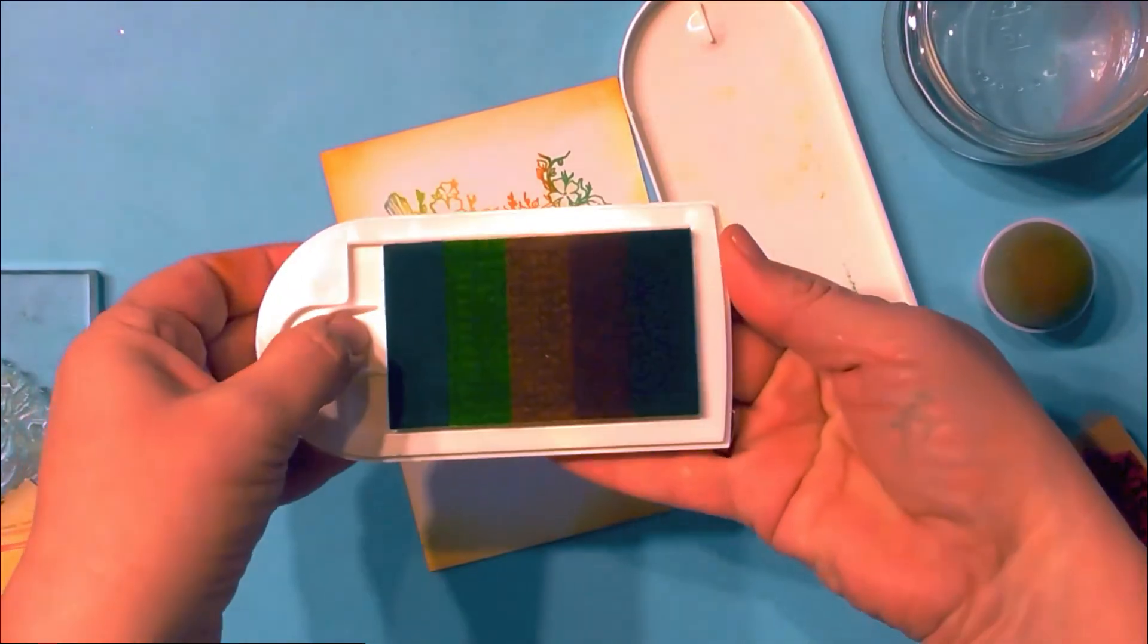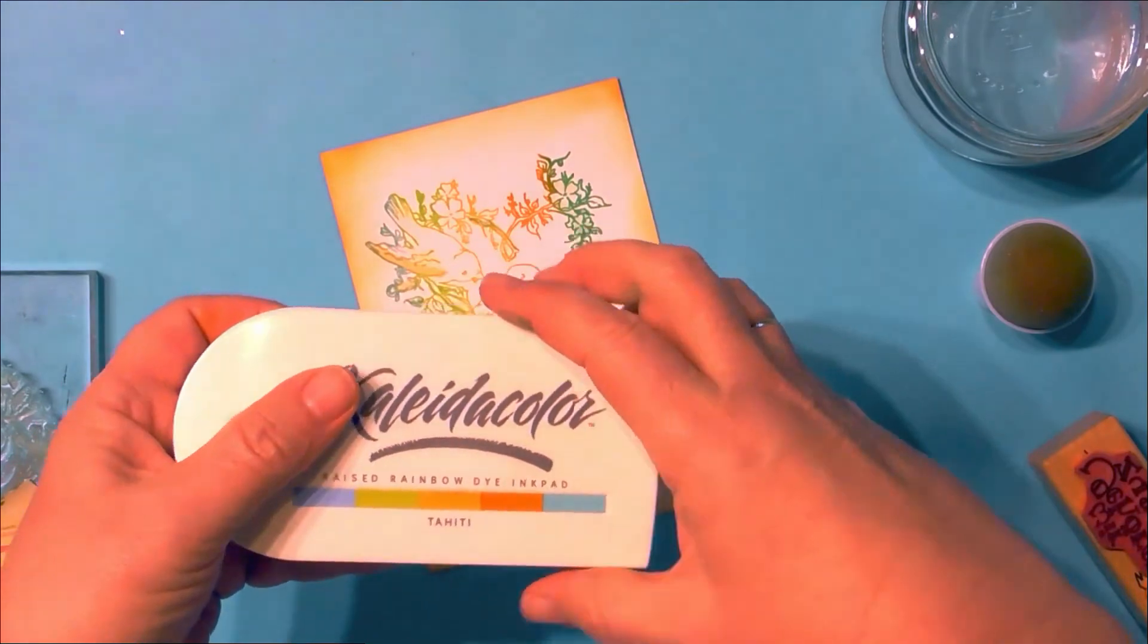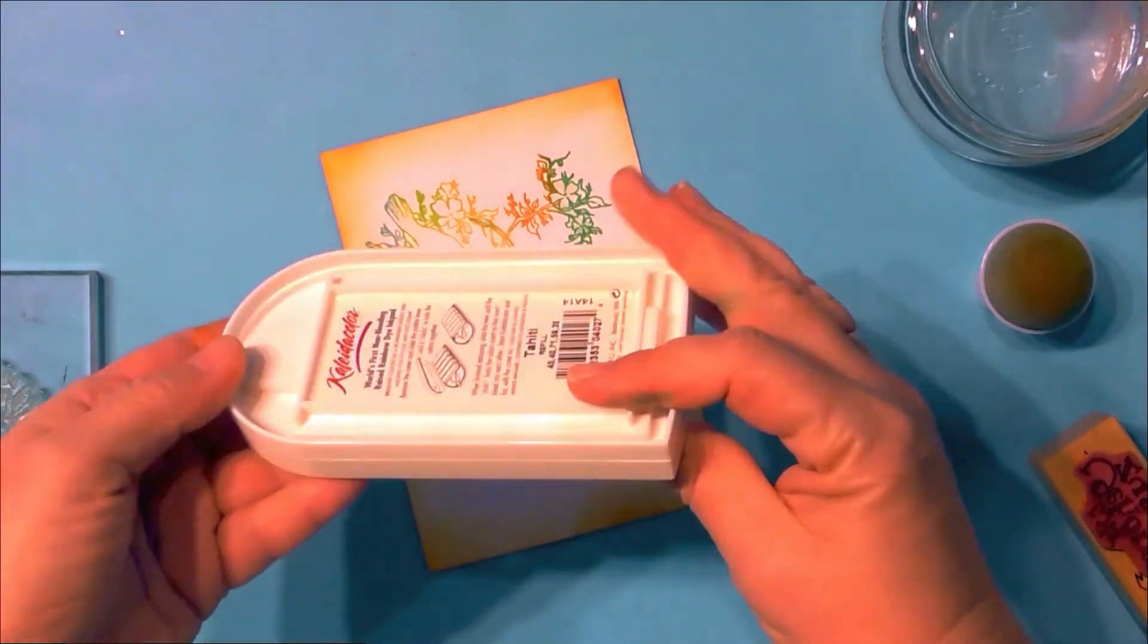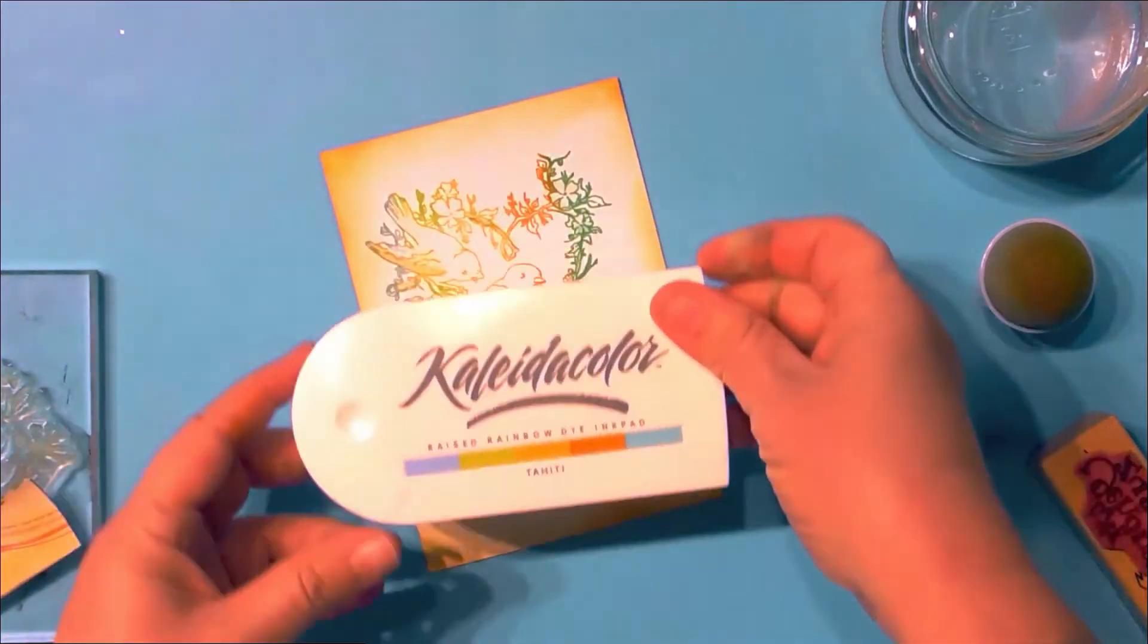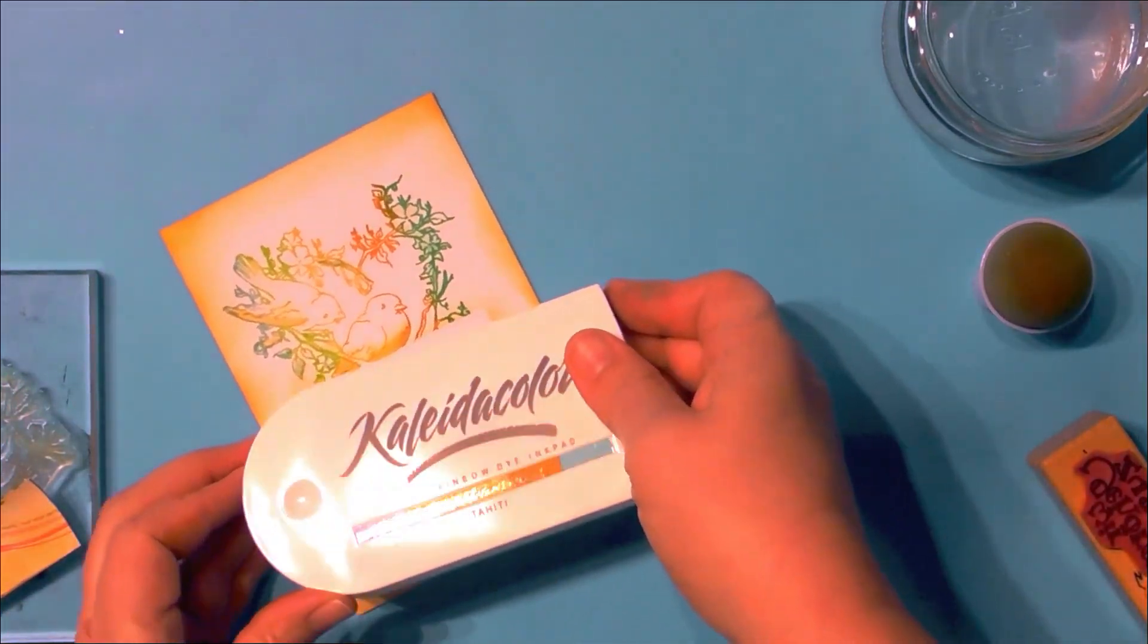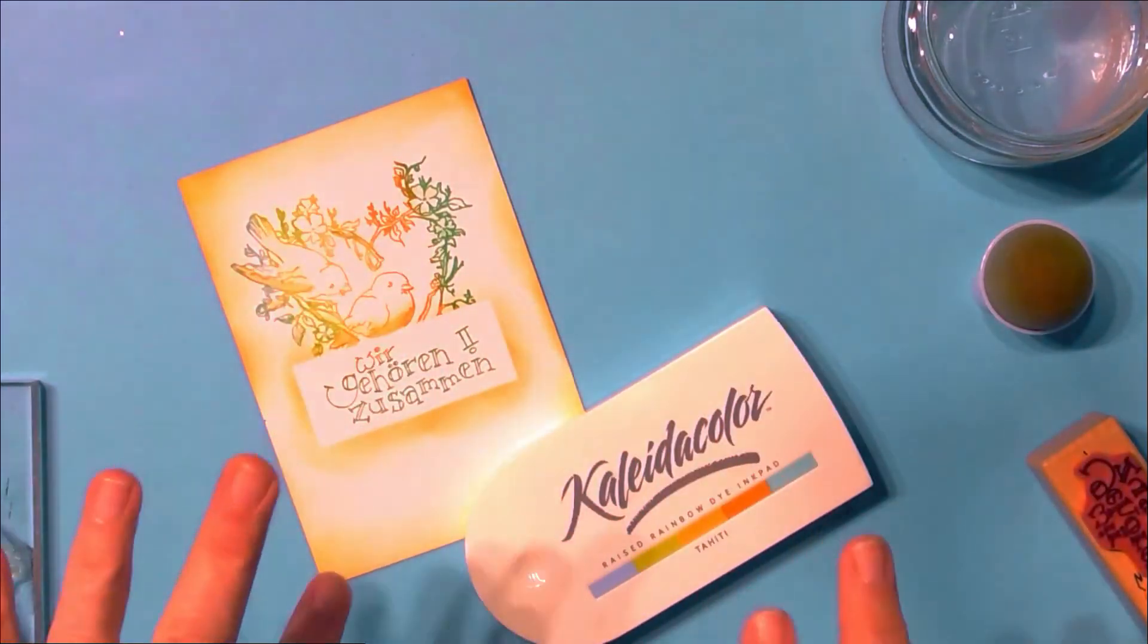Before you store your Kaleidacolor ink pad, pull the segments apart and close the lid. The color won't smudge and smear while you store your stamp pad. This stamp pad I bought like 10 years ago and it looks like it's brand new and day one.